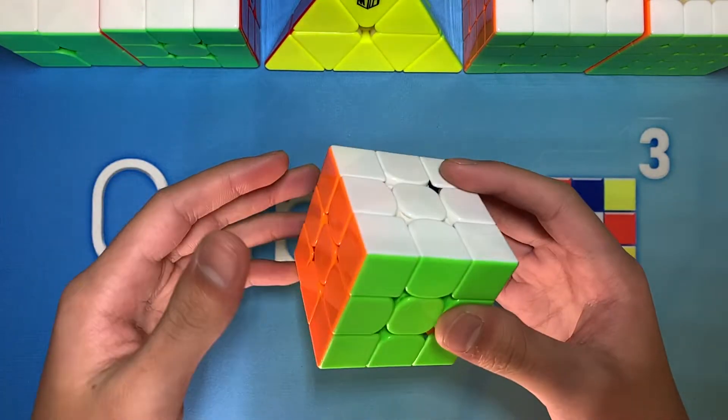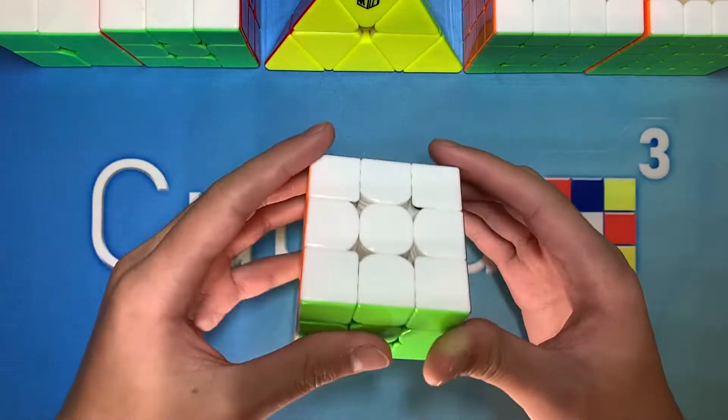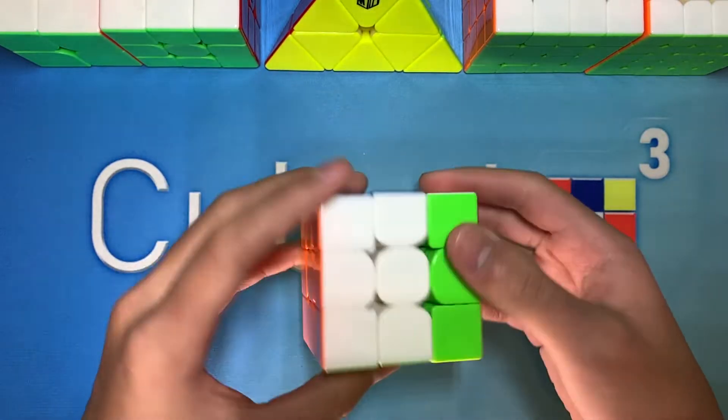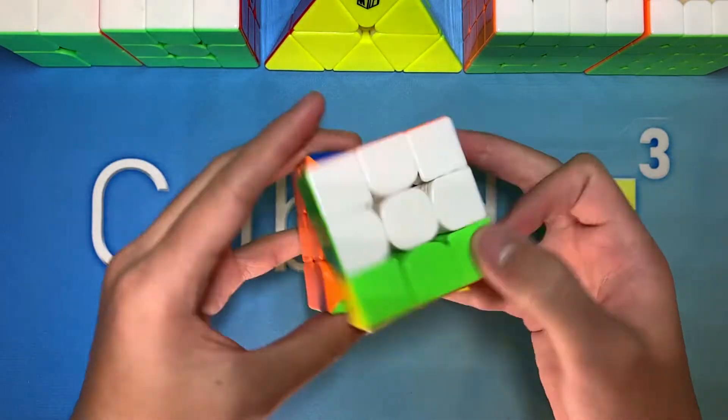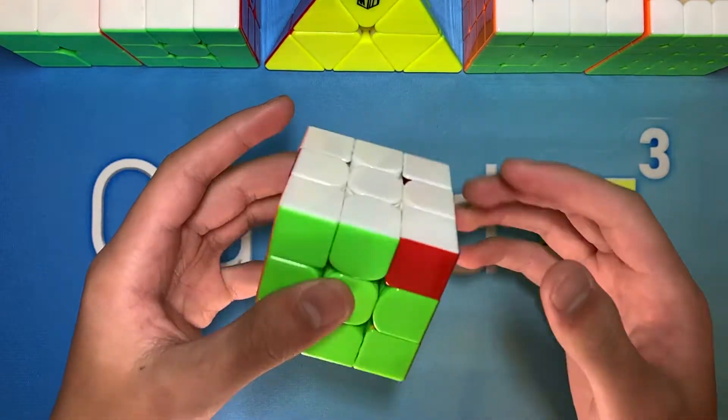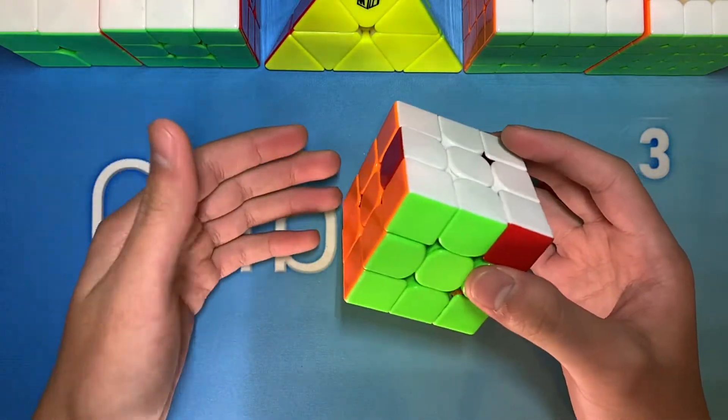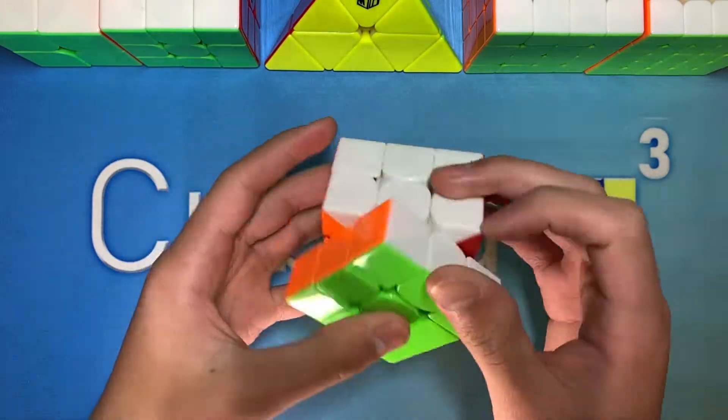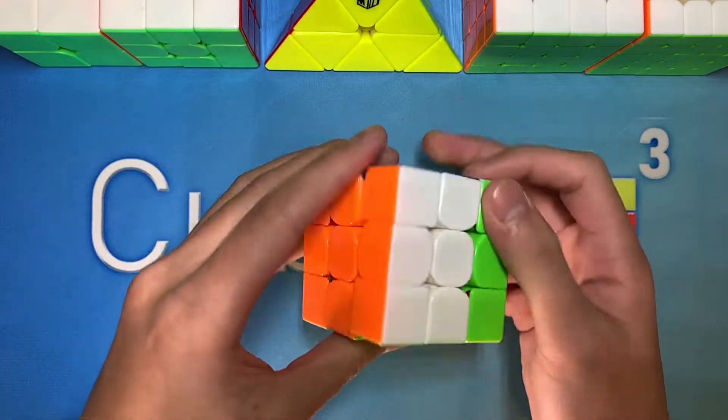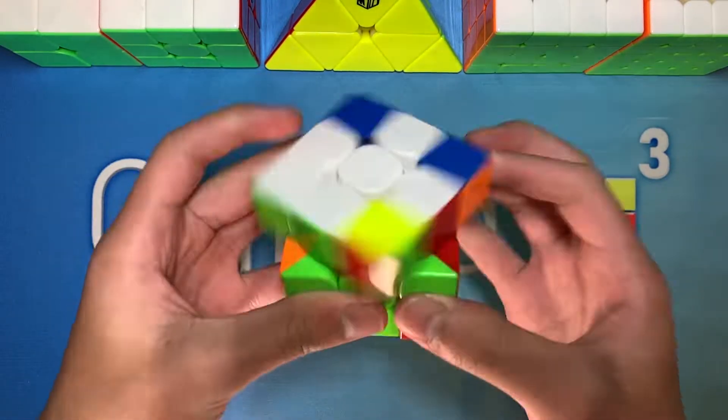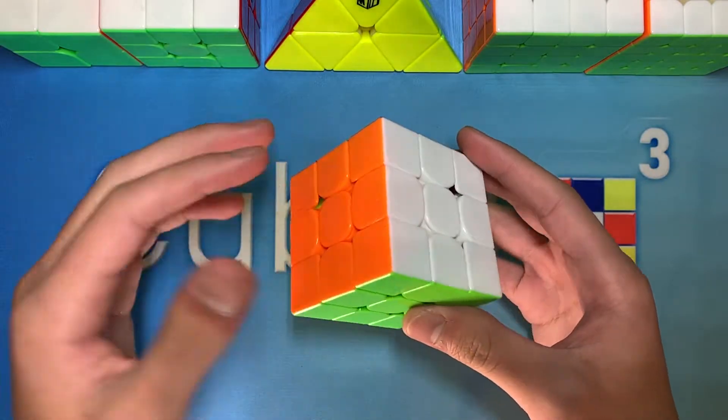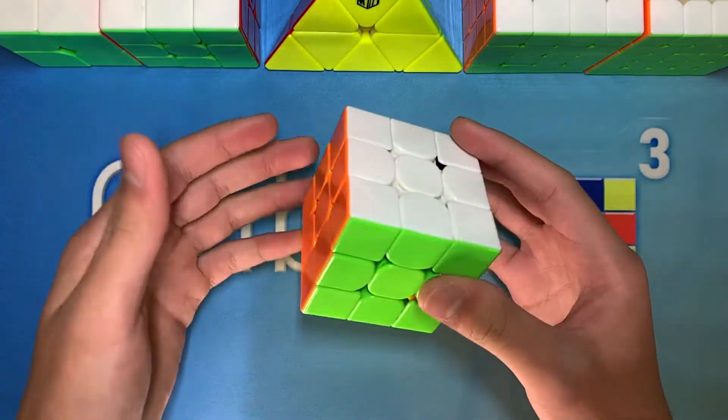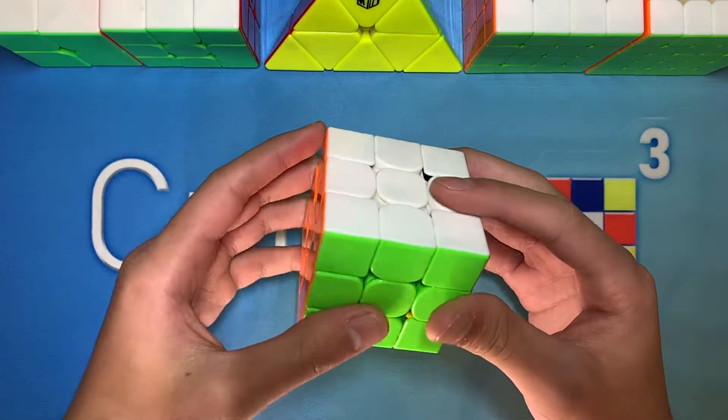For 3x3 I'm going to be using the Valk 3M that I magnetized myself. 3x3 is definitely the event that I practice the most and my main goal, as it has been for a while, is to get a sub 10 average. Making finals would also be pretty nice. I do see myself having a good chance to finally get a sub 10 average at this competition as I've been getting a lot more at home recently.